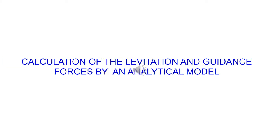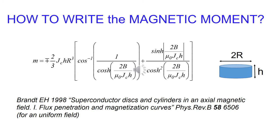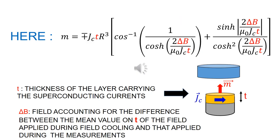The levitation and guidance forces can also be calculated with analytical models. The magnetic moment, due to the shielding currents flowing in the superconductor, can be written with an expression proposed by Brandt for a cylindrical superconductor. We use the Brandt expression replacing field H by that of the layer carrying the superconducting currents, and field B by field delta B defined in this slide.